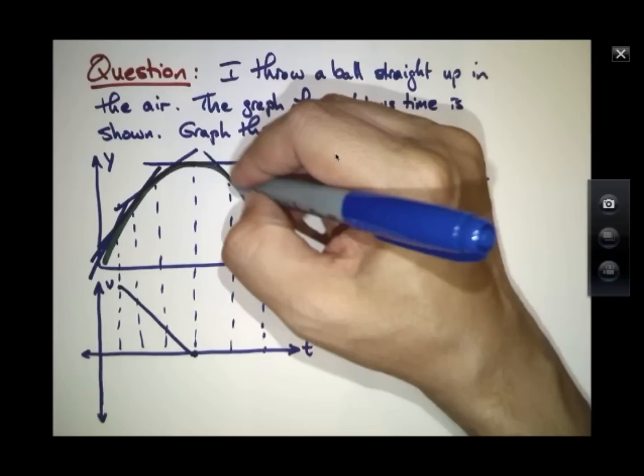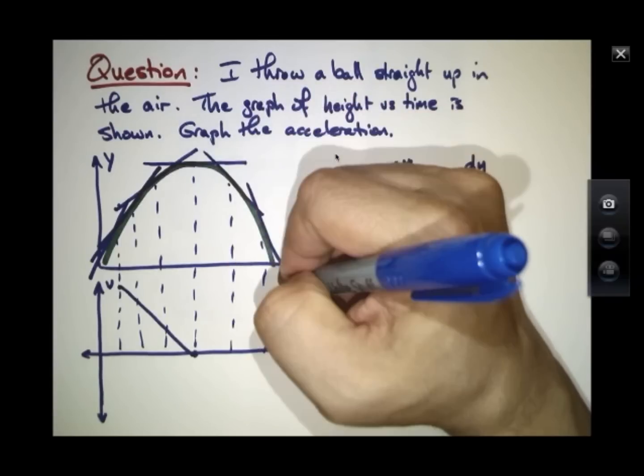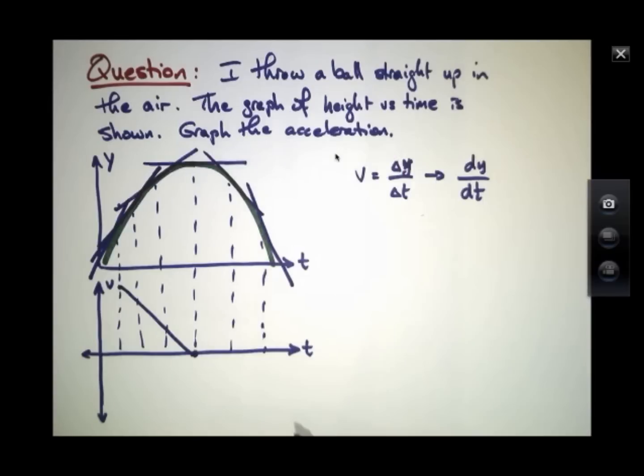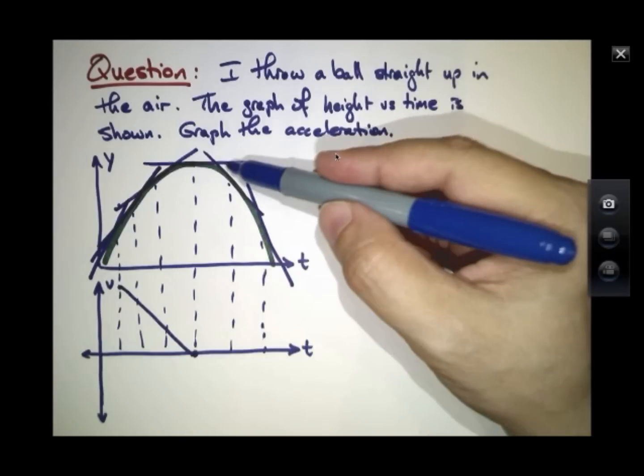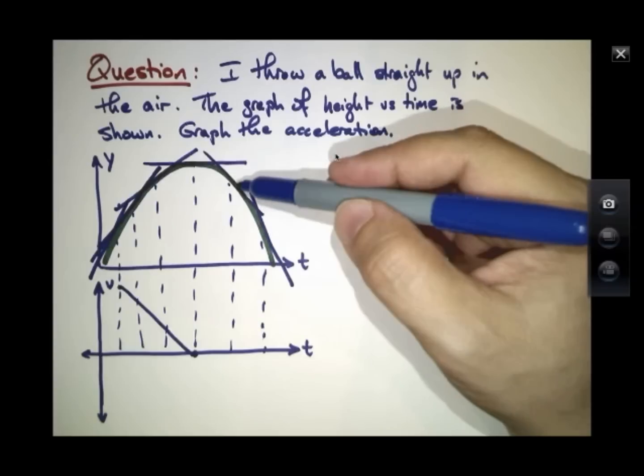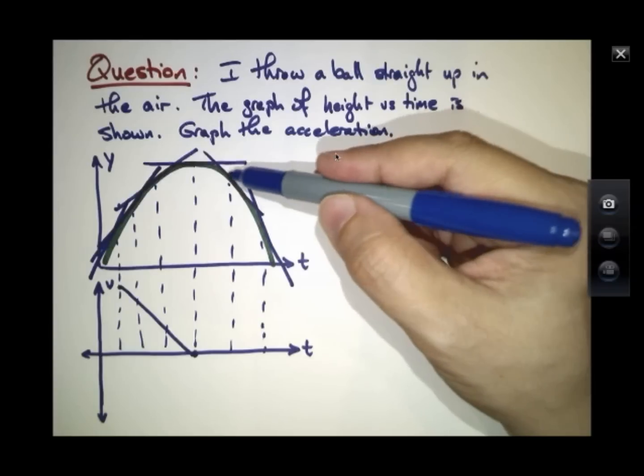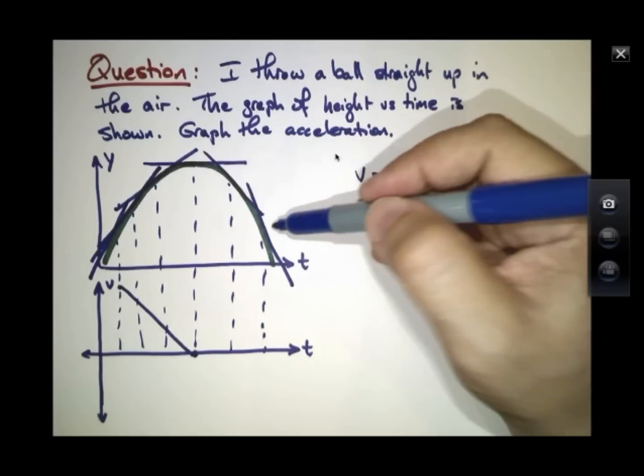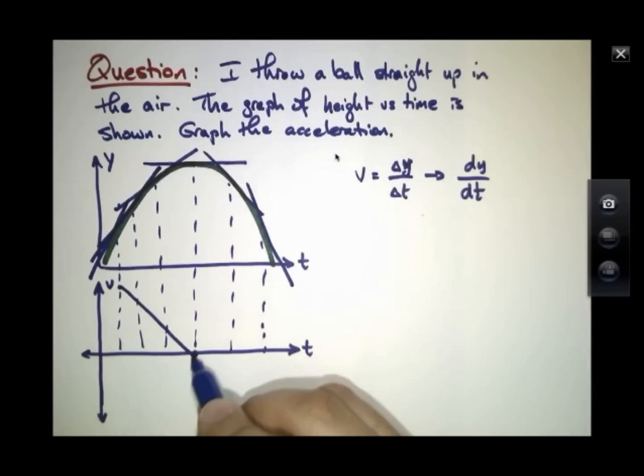And then, of course, at other times, this velocity is now becoming more and more tilted here. The slopes are becoming more and more tilted. But notice that they are negative slopes. They drop down in time for each one of these. So in fact, the velocity keeps trending down like this.